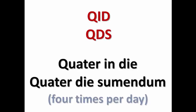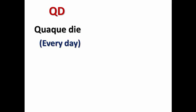Similarly, QID means this medication should be taken four times per day. One of the confusing abbreviations is QD, which stands for 'quaque die,' meaning that this medication should be taken every day. It may have the same concept as OD, but it is not as specific because it doesn't comment on the frequency of using the medication.